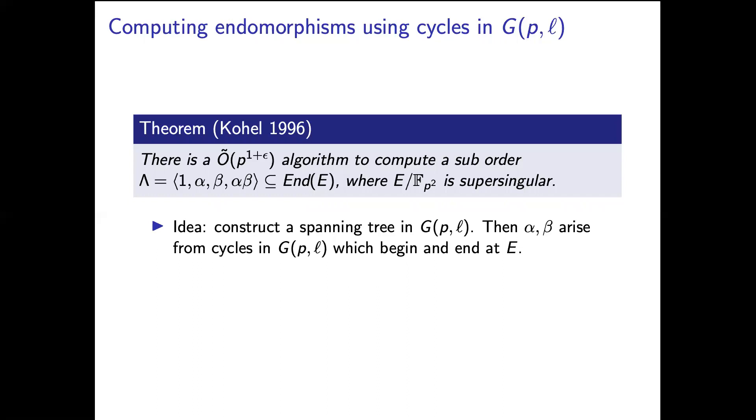So as I mentioned in Kohel's thesis he gives an algorithm for computing the suborder by finding two cycles in the ℓ-isogeny graph. He does this by computing a spanning tree in the isogeny graph. So now an algorithm of Delfs and Galbraith can improve this. They give a p^(1/2) time algorithm for computing endomorphisms of supersingular elliptic curves. Theirs is a little different. They're not computing cycles in the ℓ-isogeny graph but in some larger isogeny graph of supersingular elliptic curves.